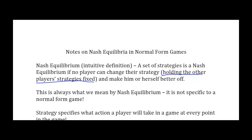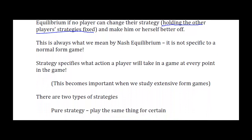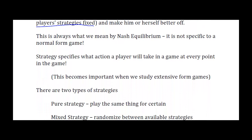Let's talk about what a strategy means. A strategy is going to be what action a player takes in a game at every point in the game. This is an easy concept when we're studying normal form games because there's only one decision to be made. But when we start talking about extensive form games where players might make more than one decision as part of their strategy, then the idea of a Nash Equilibrium including every move a player would make during the game becomes really important.